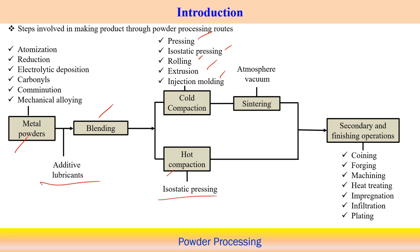Once compaction is done we perform the sintering operation, which helps with binding of the powders so they attach to each other. Sintering can be done in the presence of atmosphere, in an inert gas atmosphere, or in vacuum — to avoid contamination during the sintering operation. After sintering, it becomes a solid component which can undergo secondary and finishing operations.